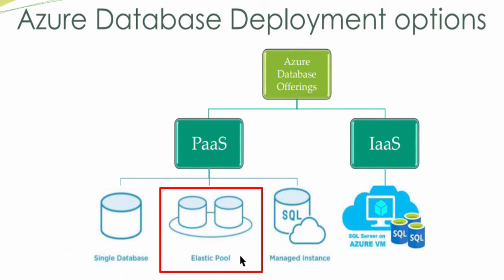Next one is the Elastic Pool. As the name suggests — Pool — Elastic Pool is a collection of databases. The resources are allocated for the pool, and within the pool, all databases can use those resources. For each database, there is a range of resources available: minimum resource and maximum resource. Minimum resource means there is a minimum guaranteed resource available for each database inside the Elastic Pool, and there is a maximum also.